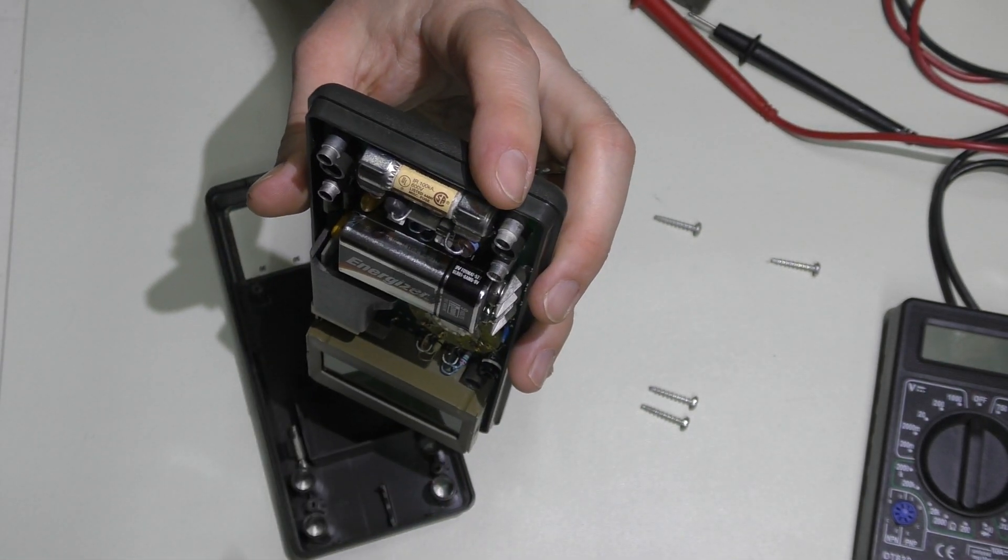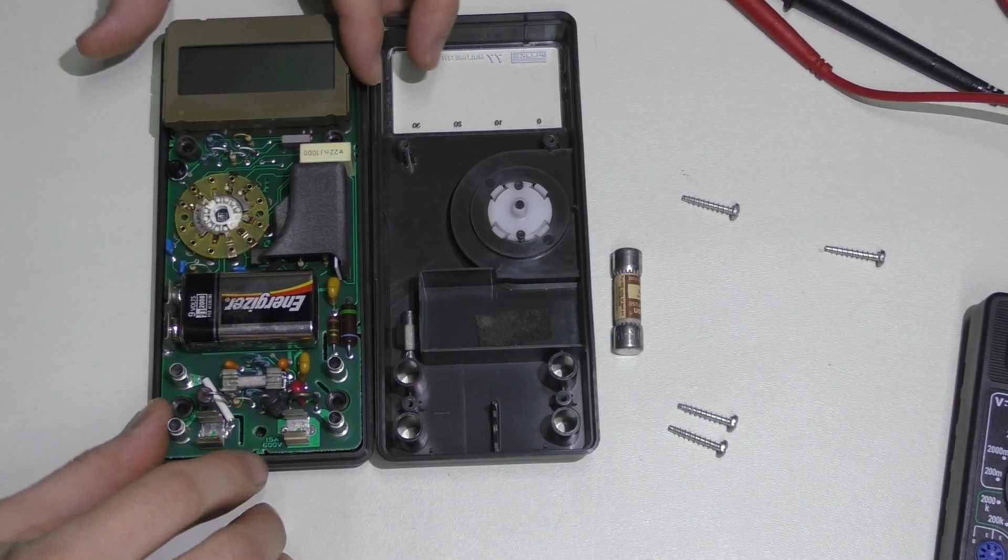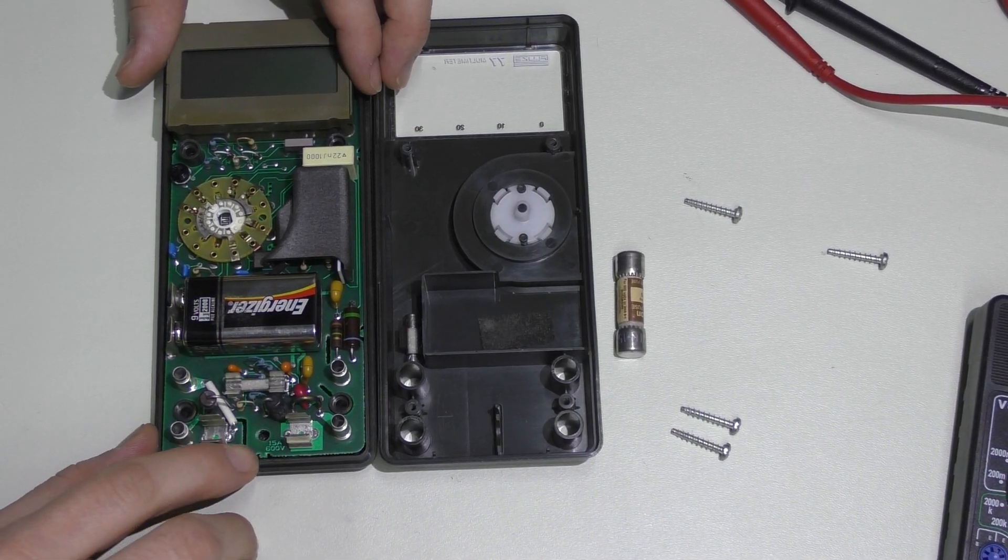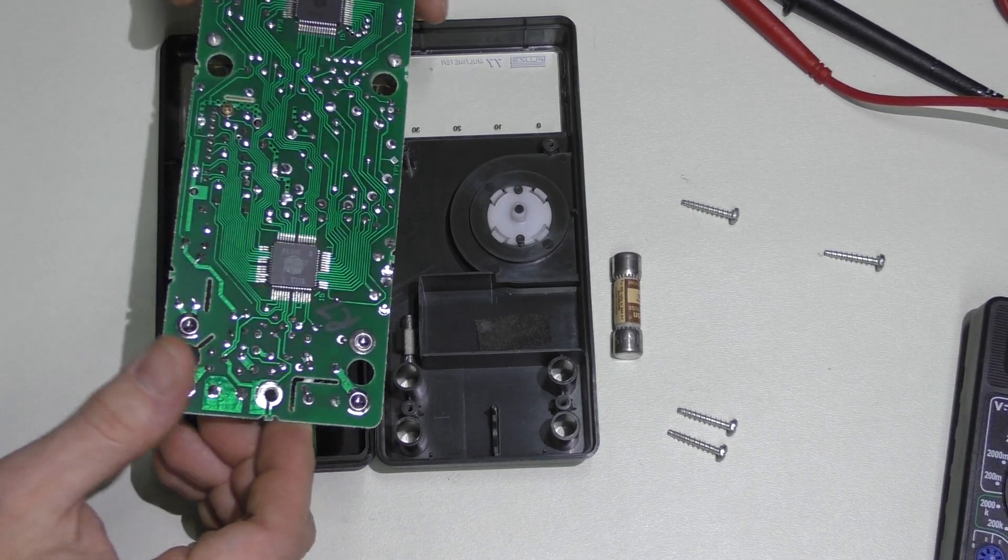All right, got this apart. Managed to grab a little snack too because I was a bit hungry. But anyway, below the large fuse holder here was another screw, and that's what was actually holding it in the bottom. So now I can just flip this over and show you the other side.